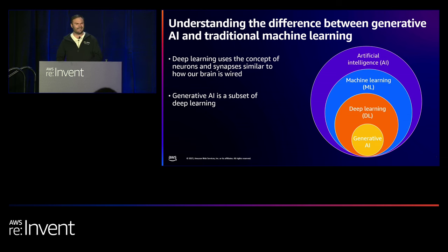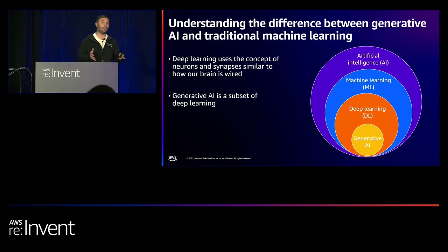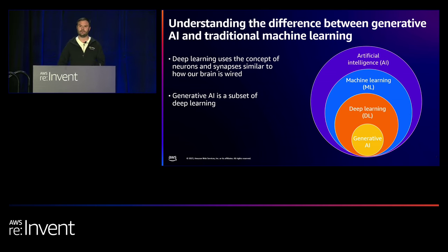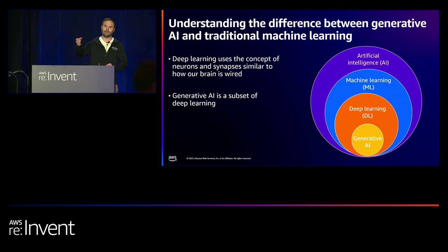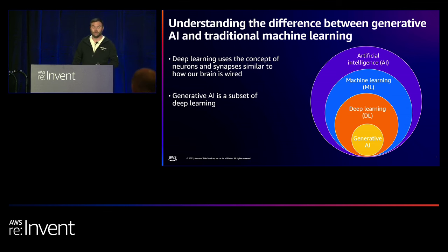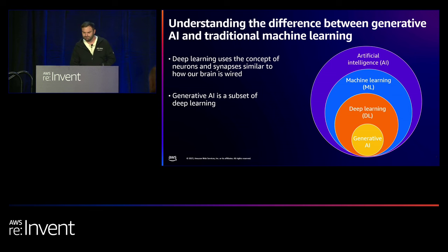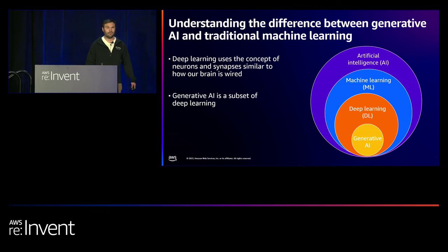Unlike traditional machine learning models that are narrow and focused on a particular task — like identifying fraudulent transactions — a single foundation model can be used to perform multiple tasks. I might need a completely separate model for different traditional ML tasks, whereas the same generative AI foundation model can be adapted across many use cases.